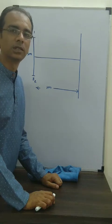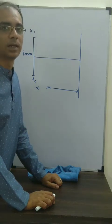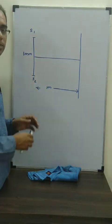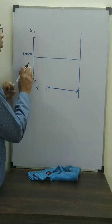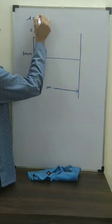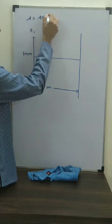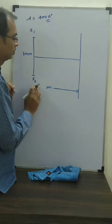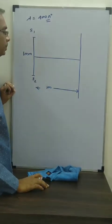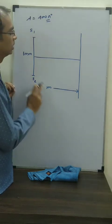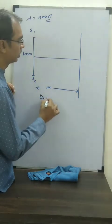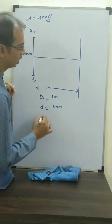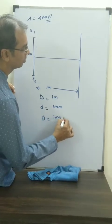Happy day students, let's continue where we left off in our last class. Suppose in this setup we have two sources s1 and s2 — they are coherent sources. The wavelength is 4000 Angstroms, the distance between the two sources is 1 mm, and the distance between the source and the screen is 1 meter. We can see that small d is very small compared to capital D.